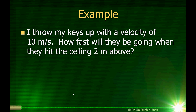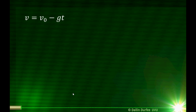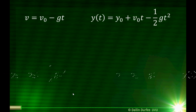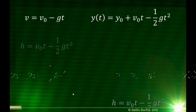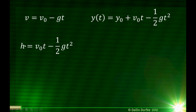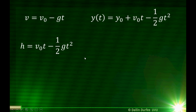Here's one more example. Let's imagine they don't go 5 meters up because they run into a ceiling which is 2 meters above the point I let go of them. I throw my keys up at a velocity of 10 meters per second. How fast will they be going when they hit the ceiling 2 meters above? I have an equation that tells me the velocity as a function of time. I just need to find the time at which they hit the ceiling by finding when their position equals 2 meters.